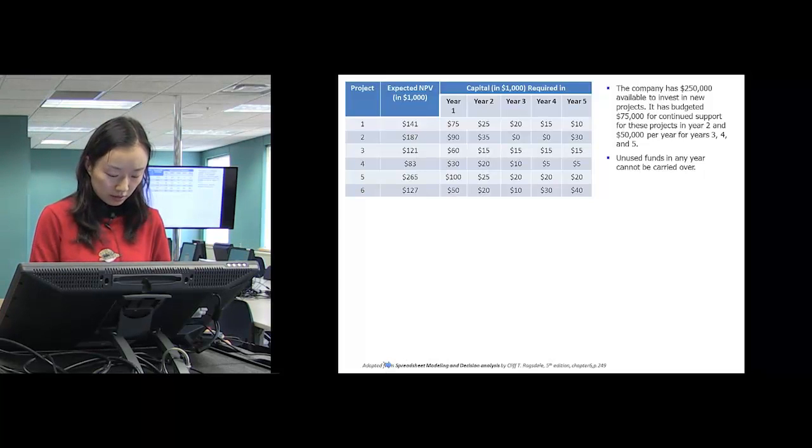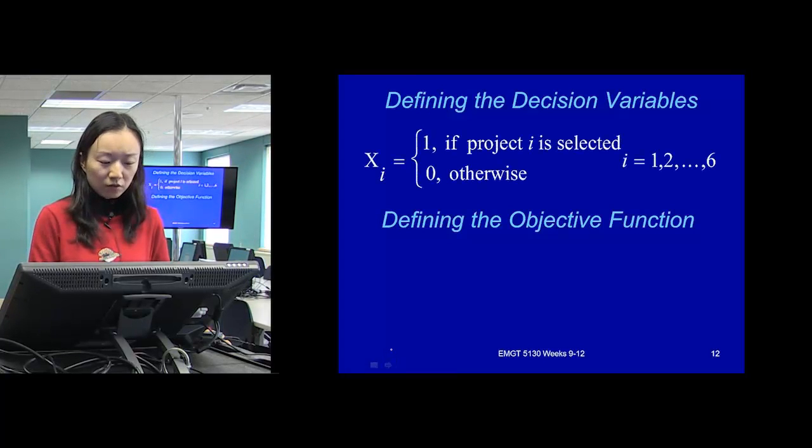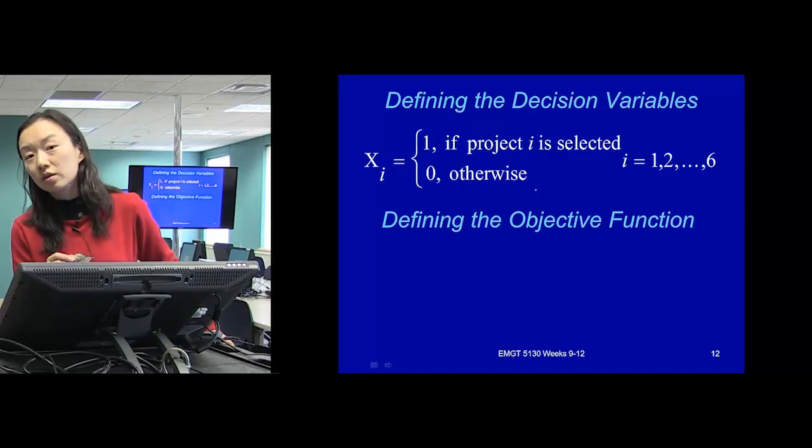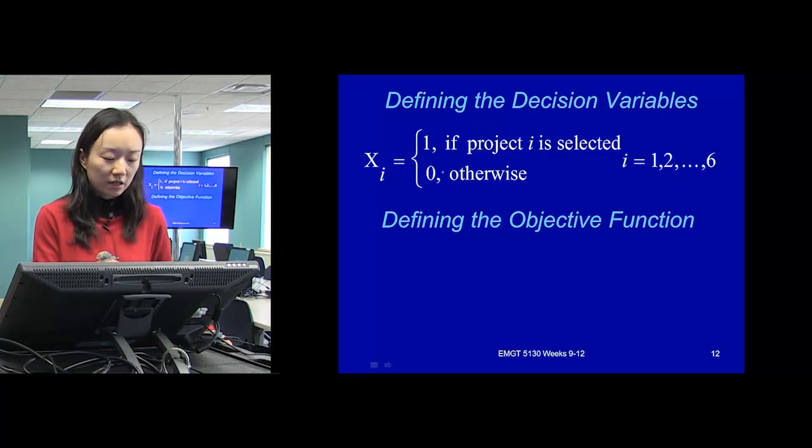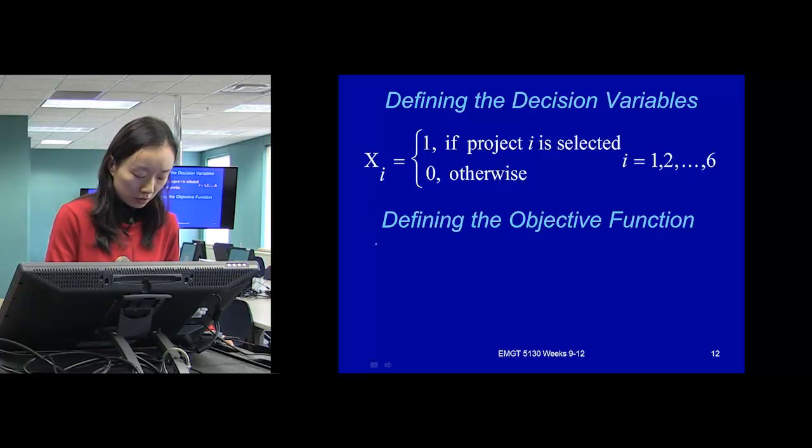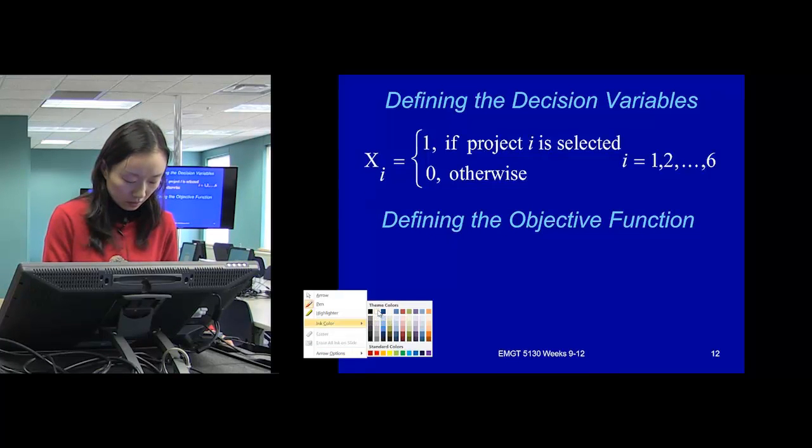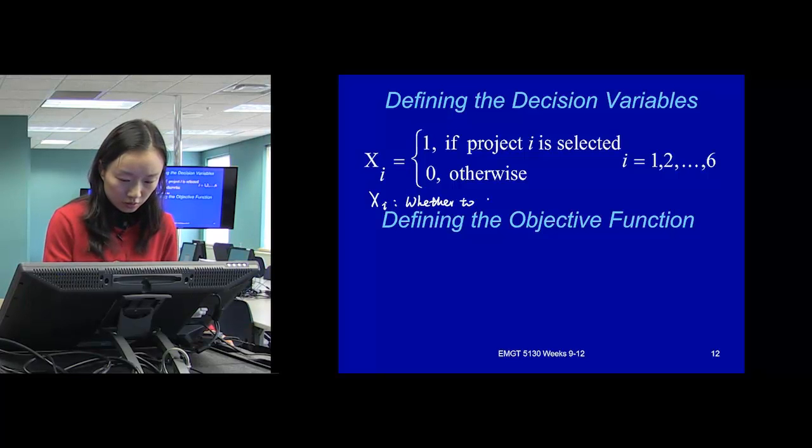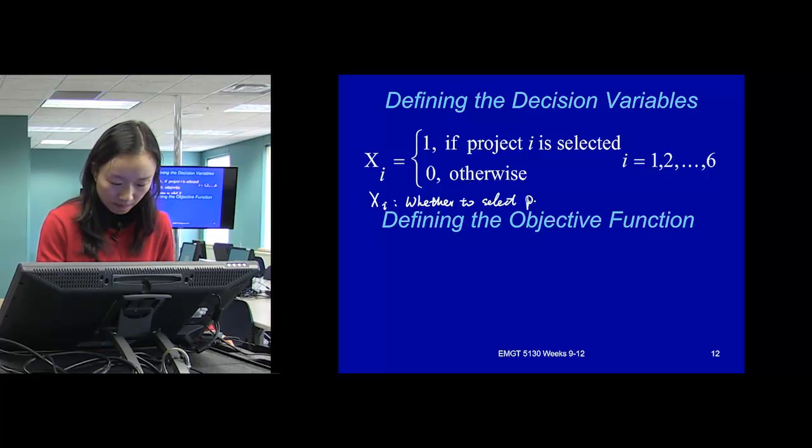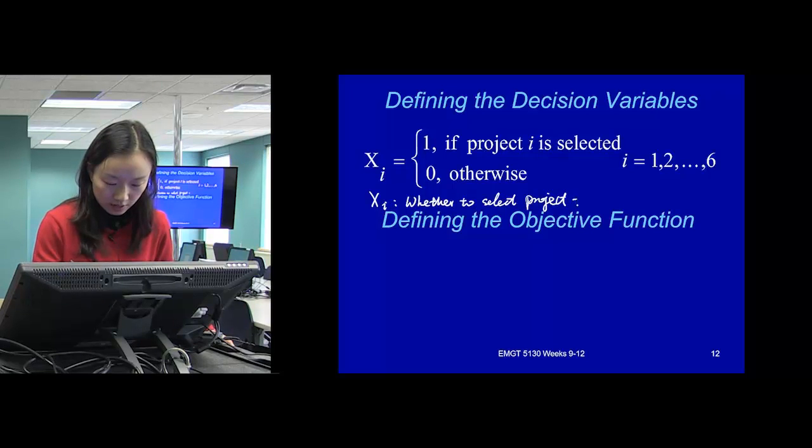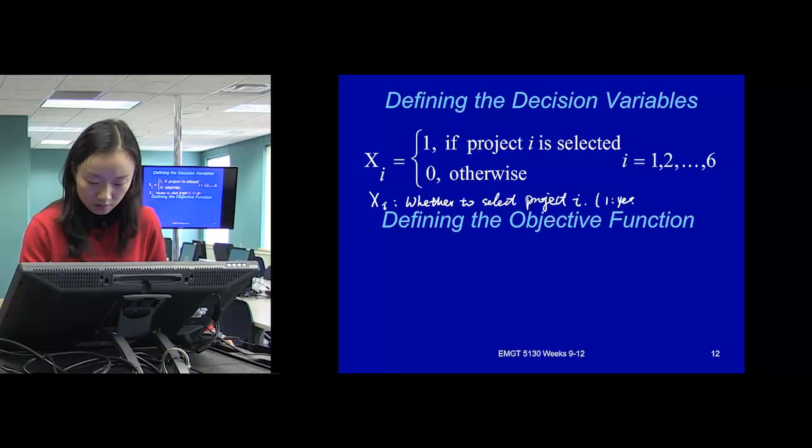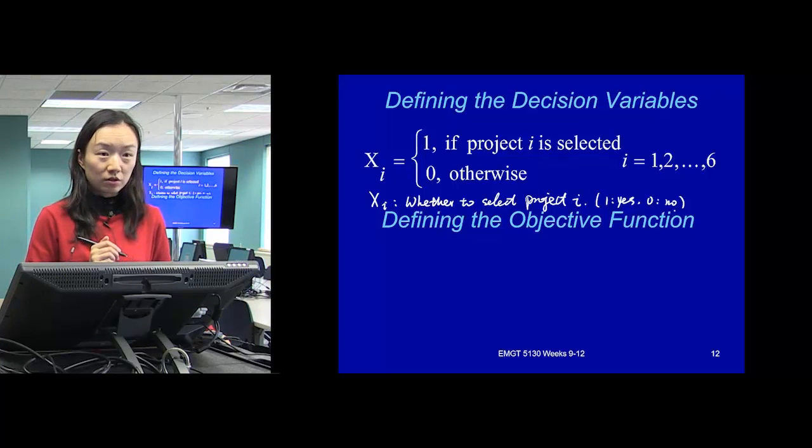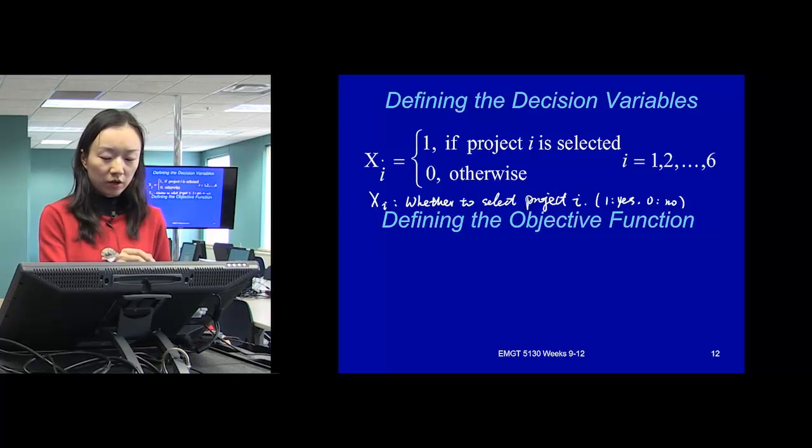For binary variables, this is the standard way to define them. Say xi equals to be 1 if project i is selected, equal to 0 otherwise. The other way to do it would be xi represents whether to select project i: 1 means yes, 0 means no. So when you define the decision variables, which should be binaries, either way works.